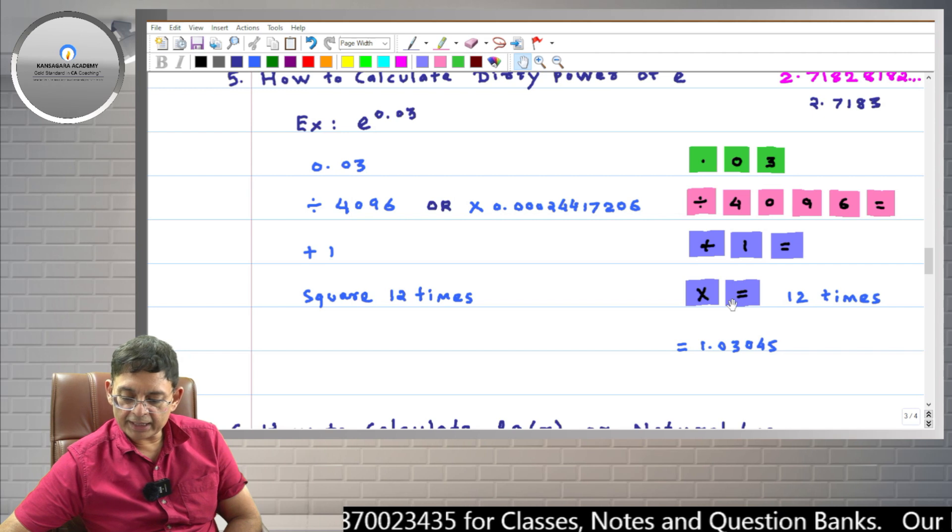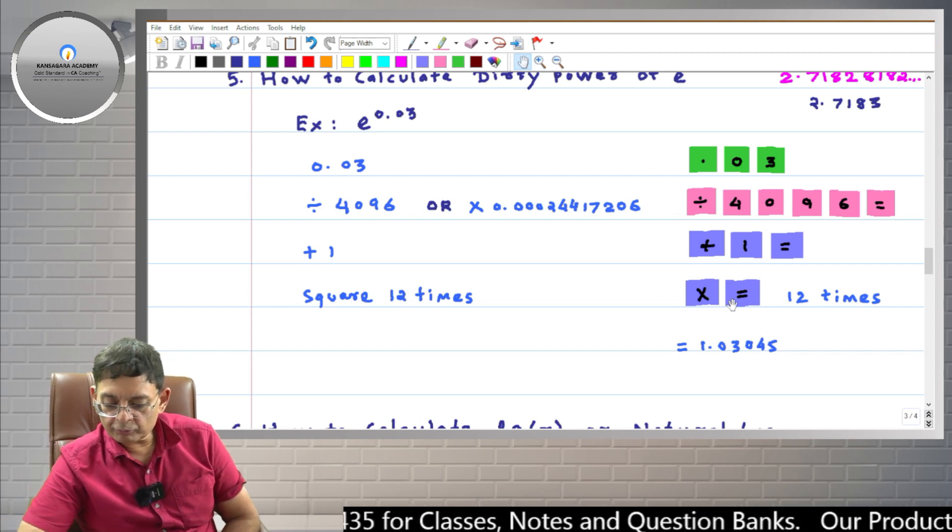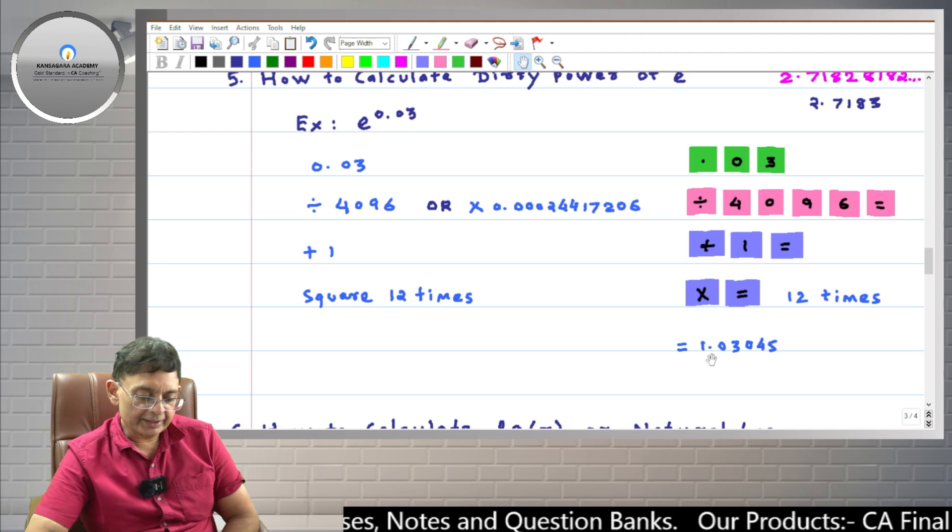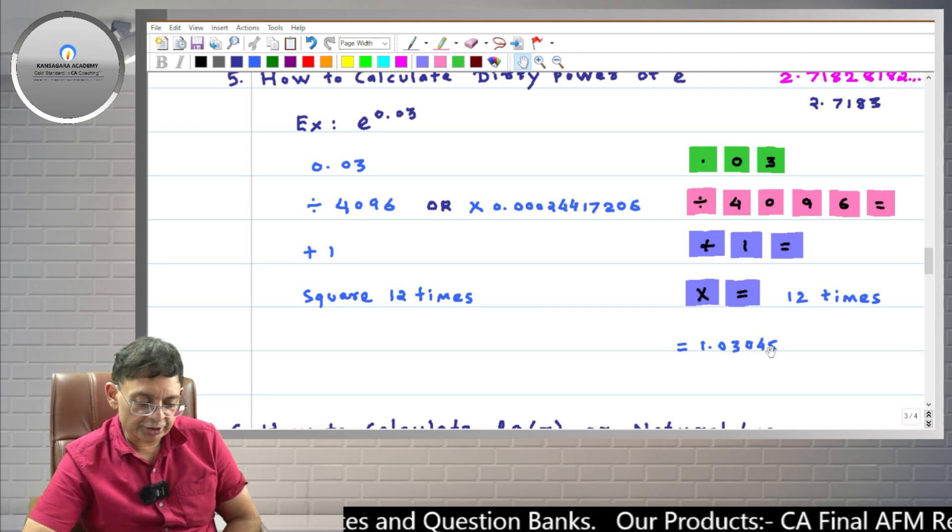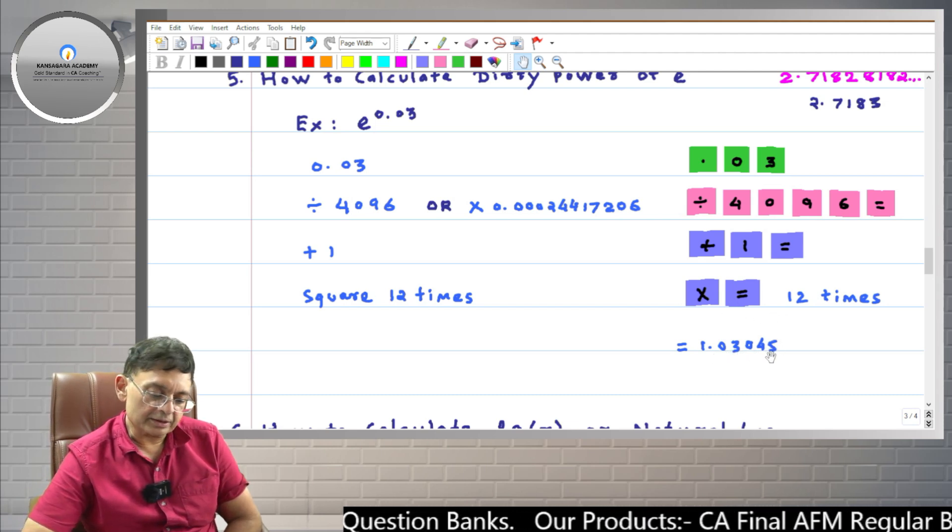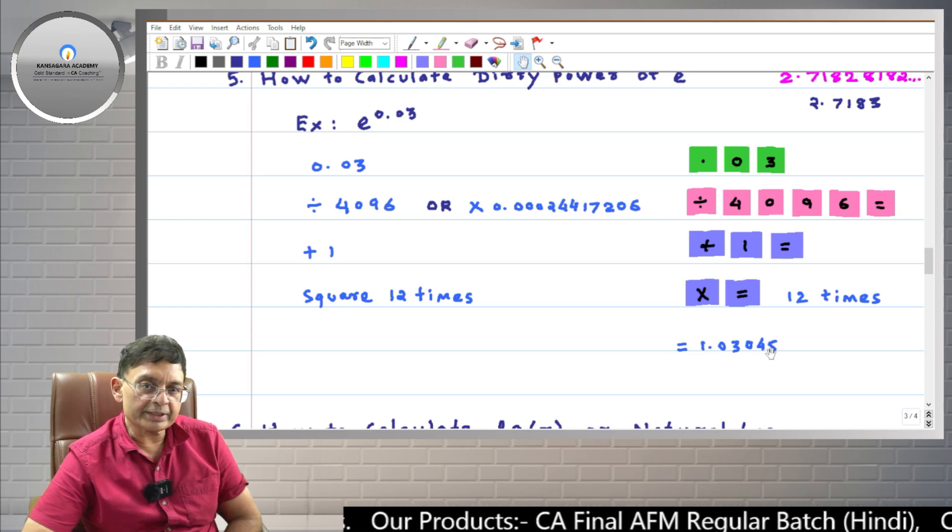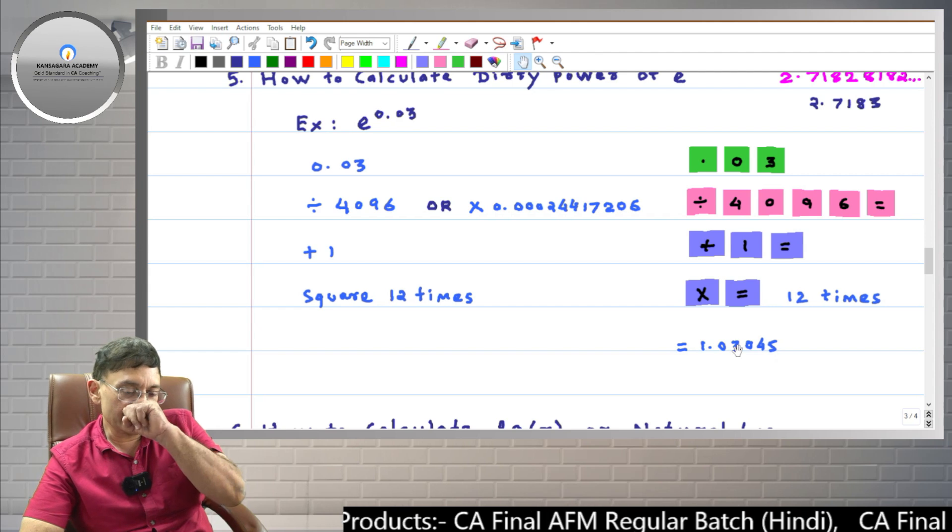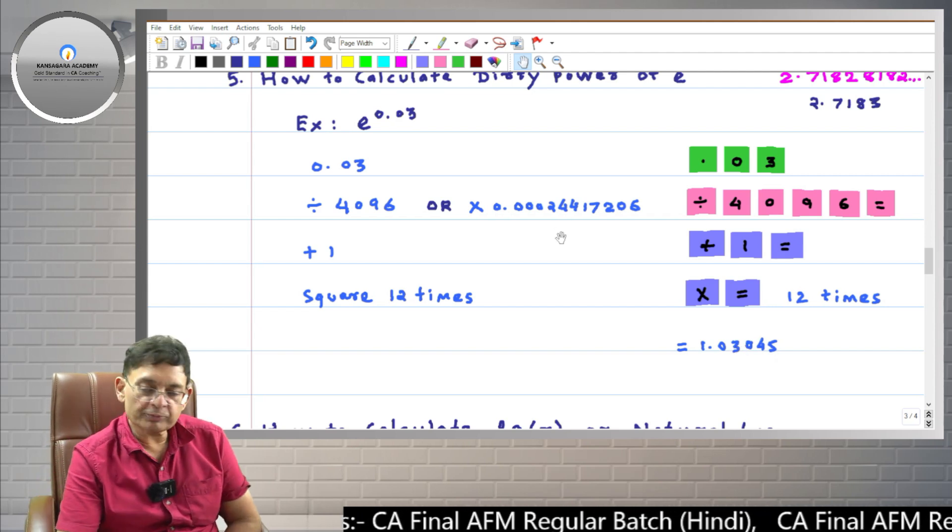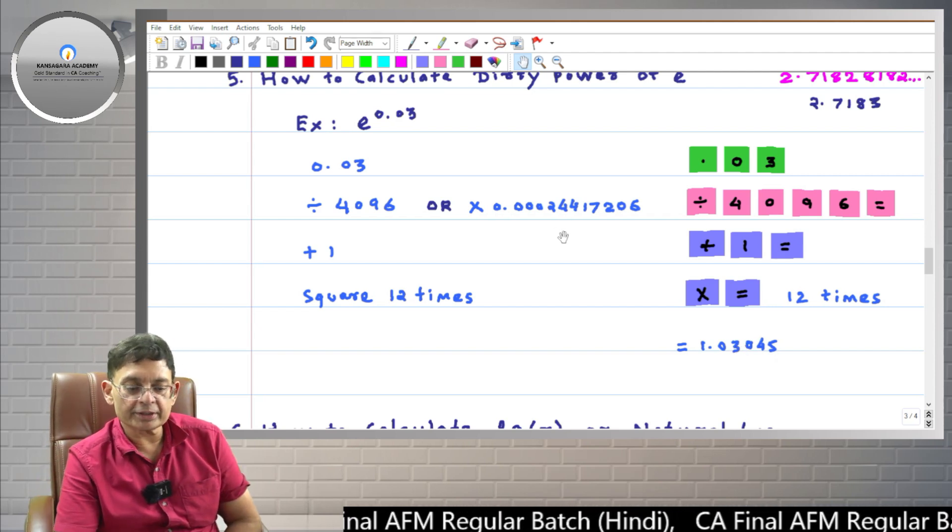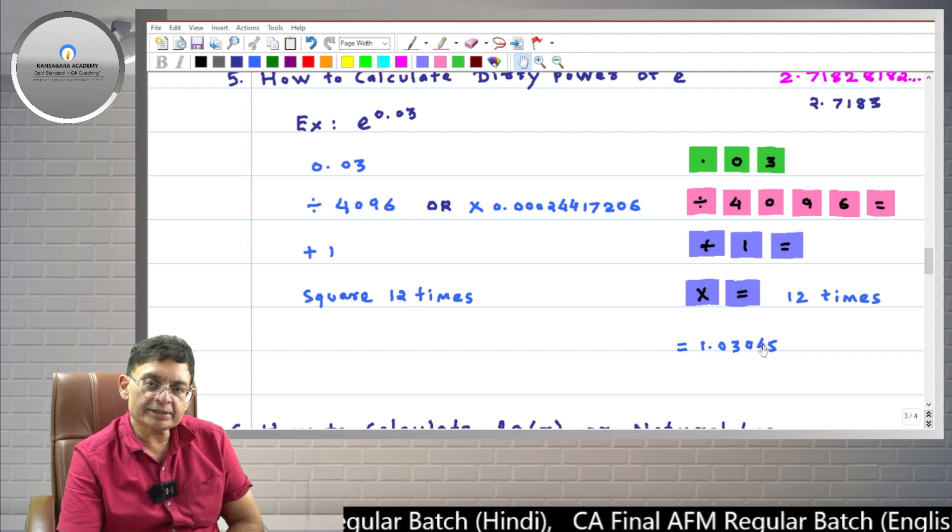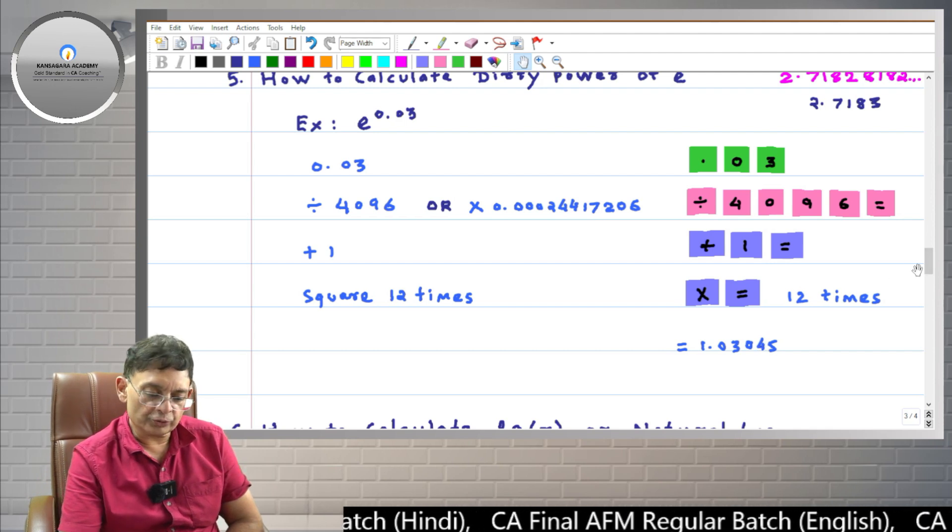So friends, the number I am seeing on the screen is 1.03045. So here I have written 1.03045. This is the answer. But remember friends, this is not a 100% precise answer. It is a reasonably accurate answer. This process does not give you 100% precise answer, but this accuracy is by and large enough for you.